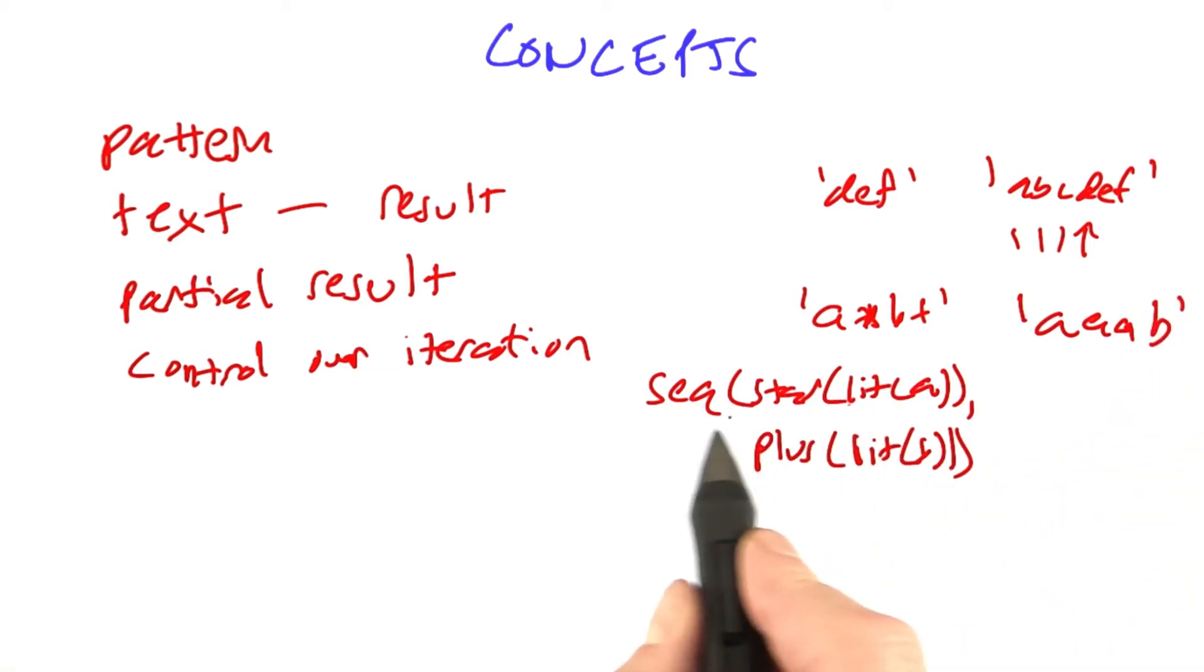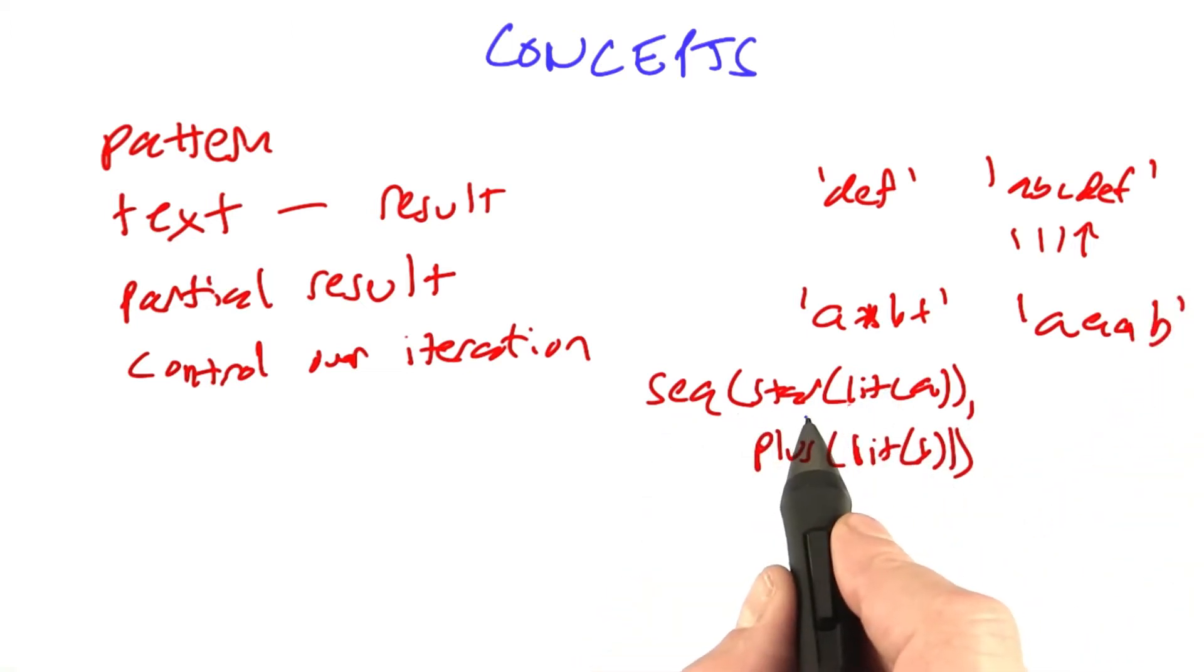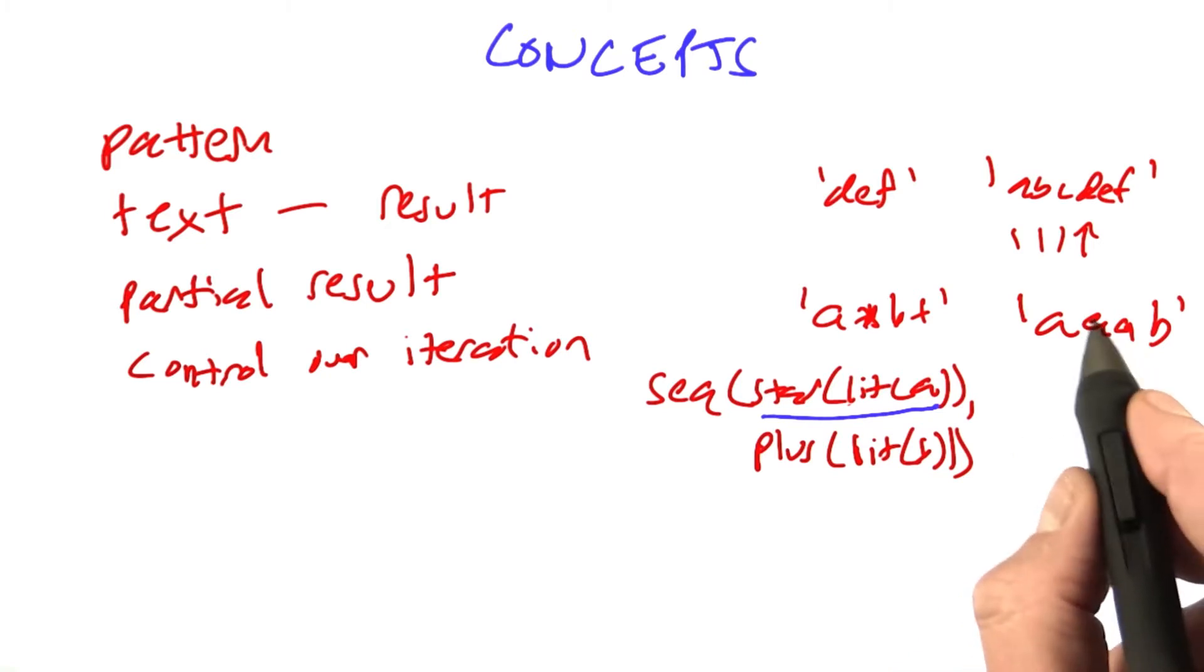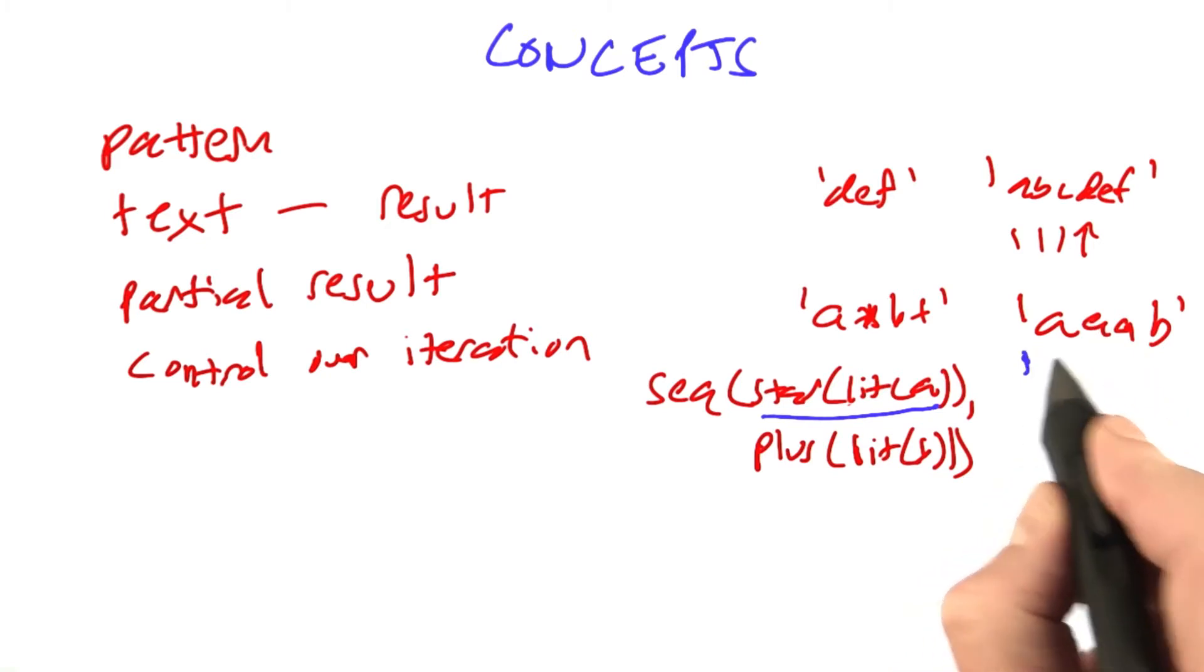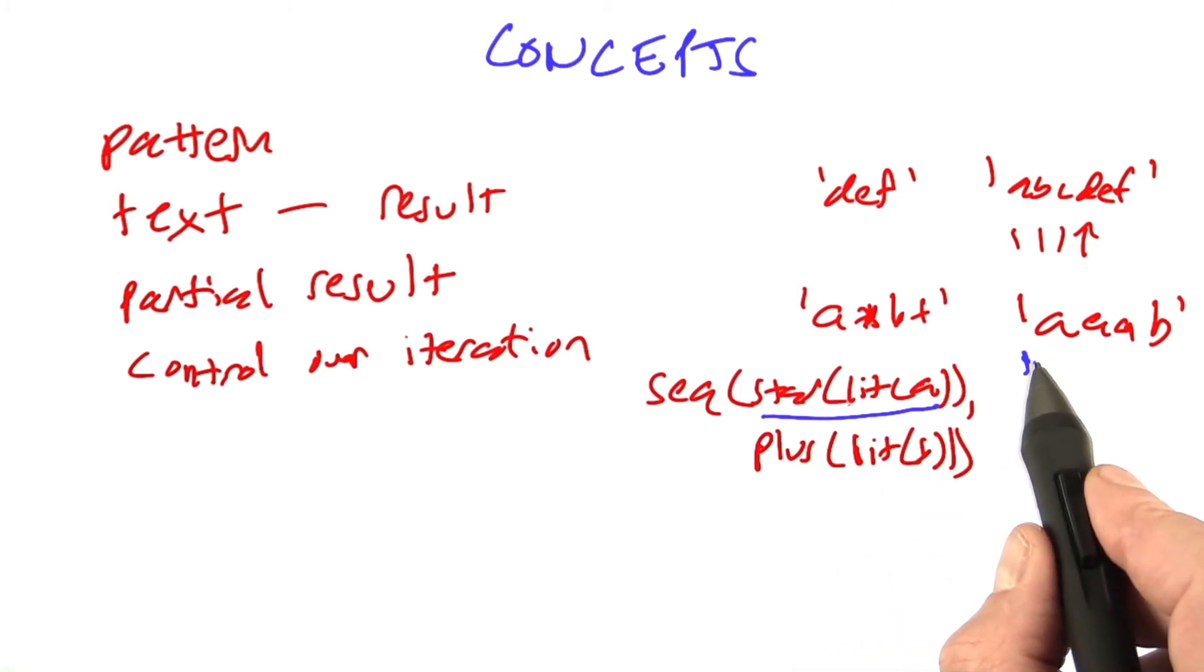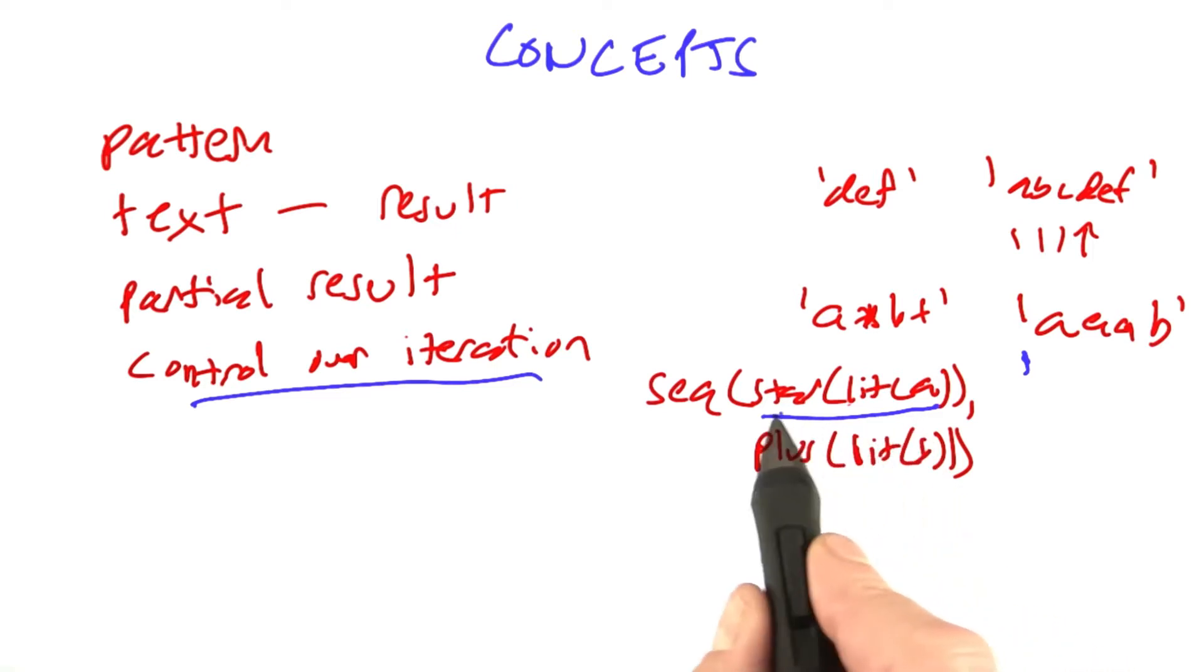Now, if we had a control structure that says sequence, look to match the first and then look at the second, and if the first star of literal a only had one possible result, then it would say, yes, it matches here right at the start. Now I'll look for something after that. Does it match plus of literal b? No, it doesn't. So I've got to have iteration over the possible results.